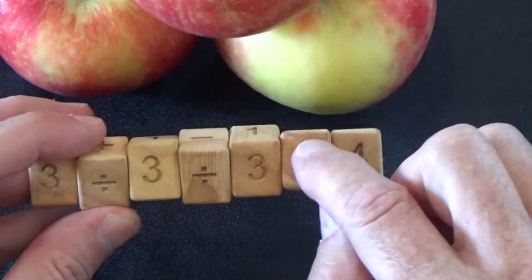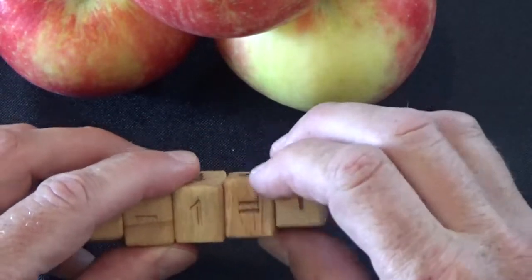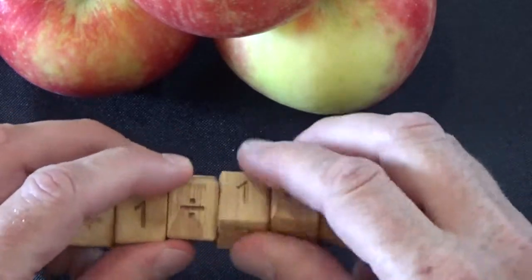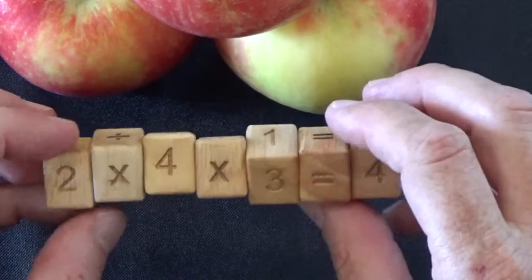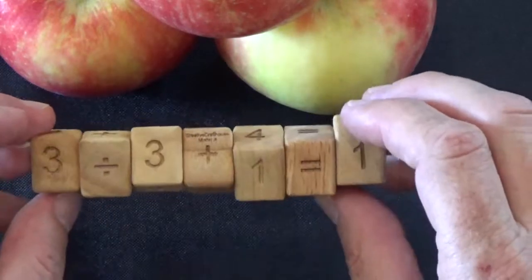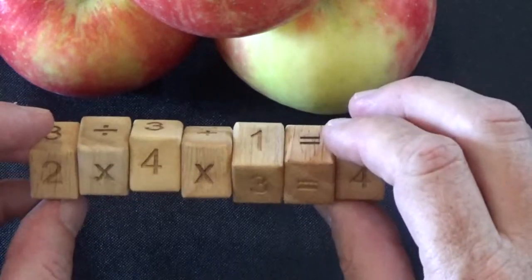This fifth or sixth block here has equal signs on all sides. So all of these blocks twist and the object here is to create a correct math equation on each of the faces at the same time.